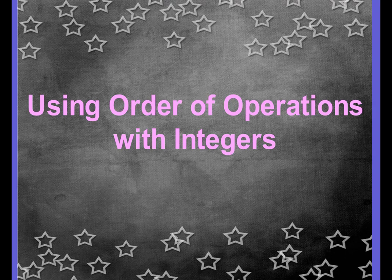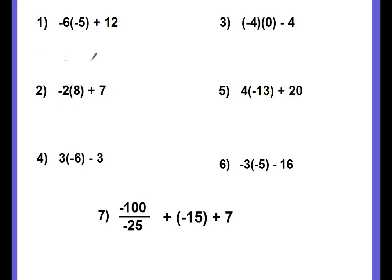Now we're going to use our order of operations, but this time we're going to include integers — not all positive numbers, some will be negative, so we'll use the integer rules we've just learned. Example number one. When you have a number sitting next to parentheses, that means to multiply. Parentheses really stands for groups, so this is a group of negative 5, and negative 6 groups of negative 5 means to multiply. Sometimes you'll see this with a dot: negative 6 dot negative 5 — that dot also means to multiply.